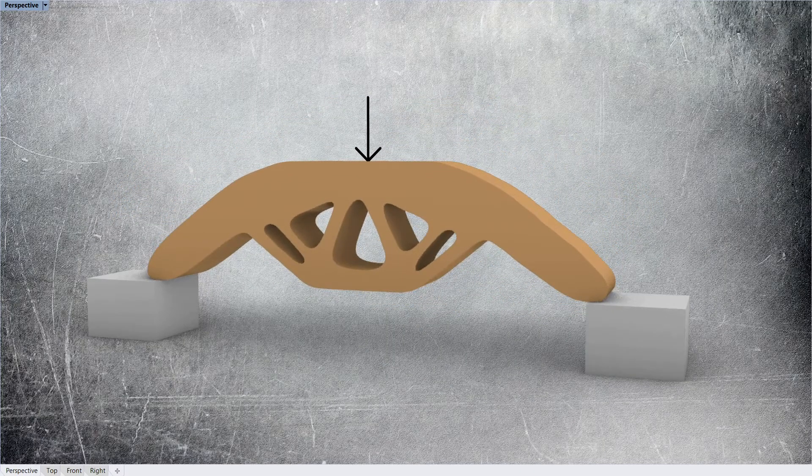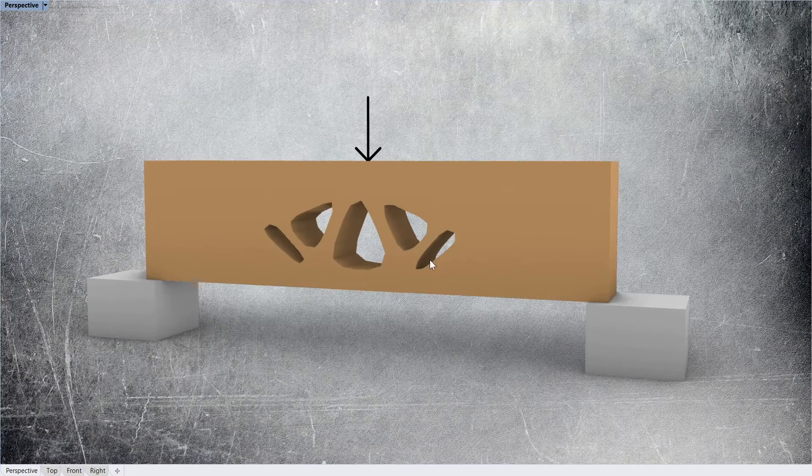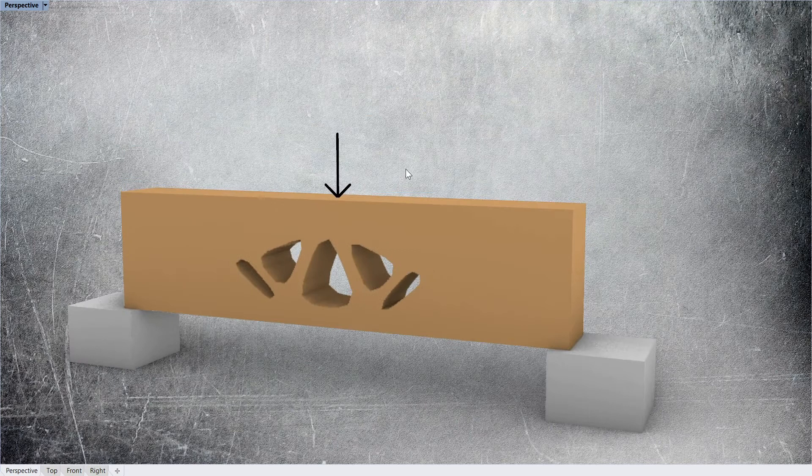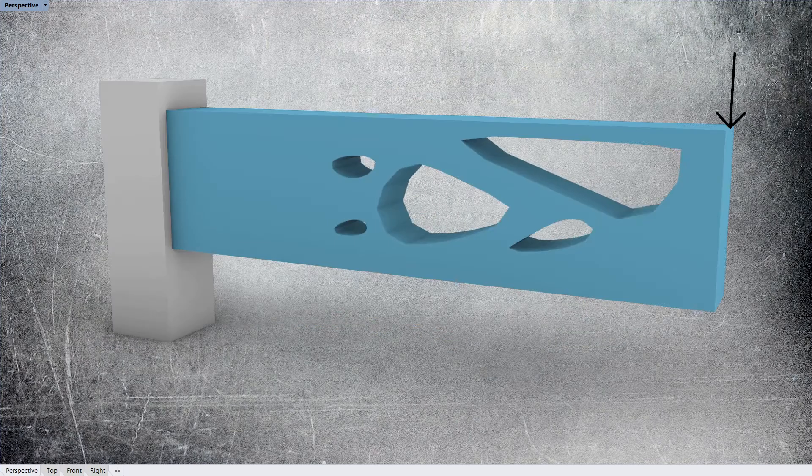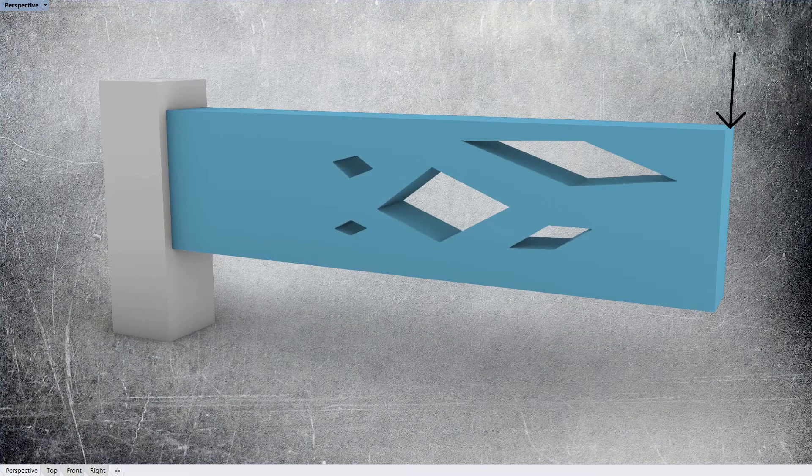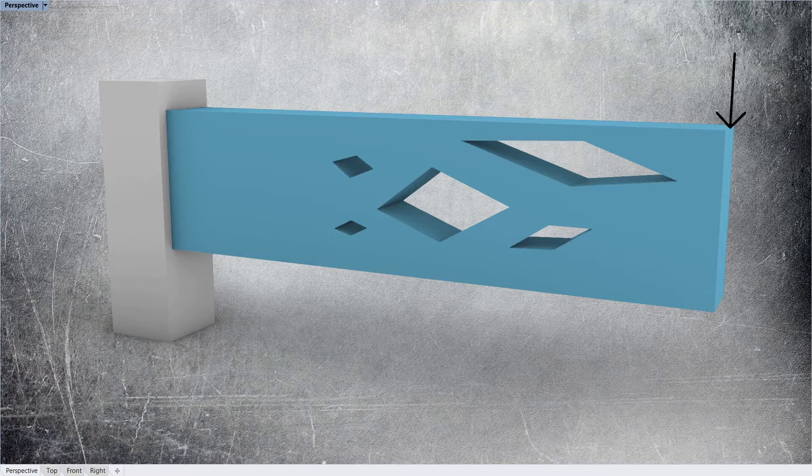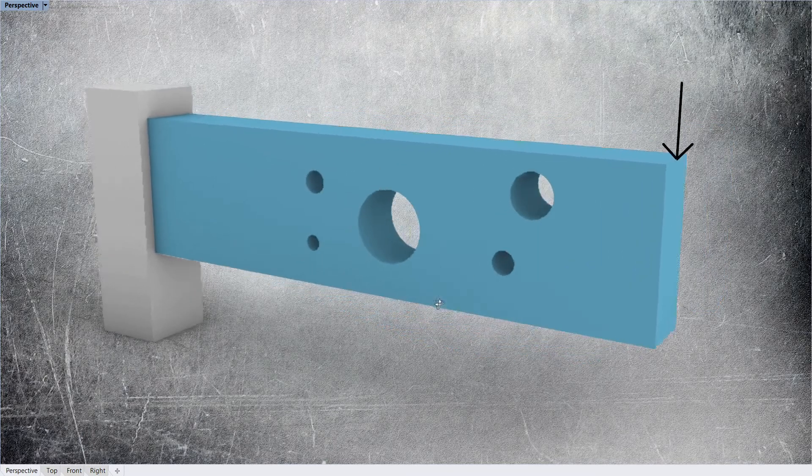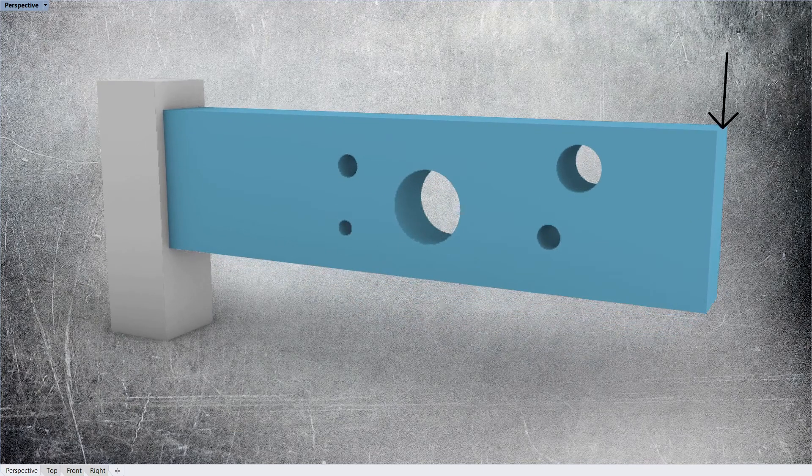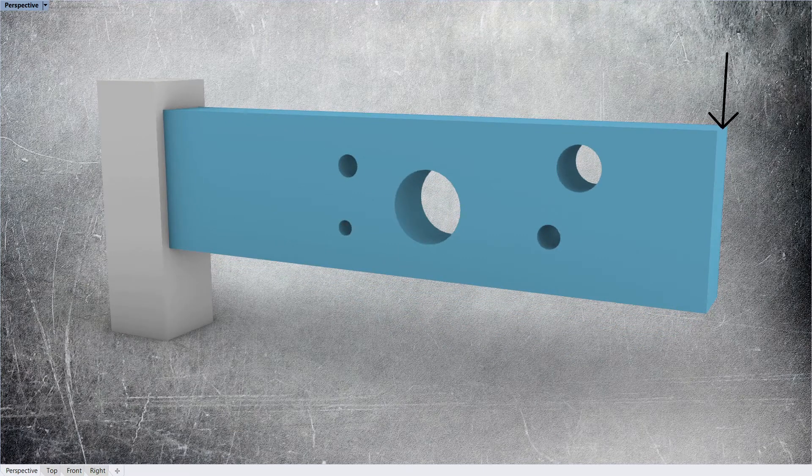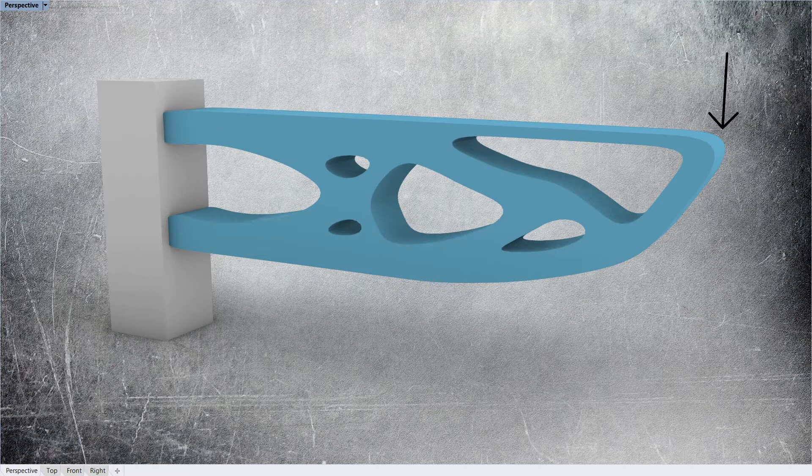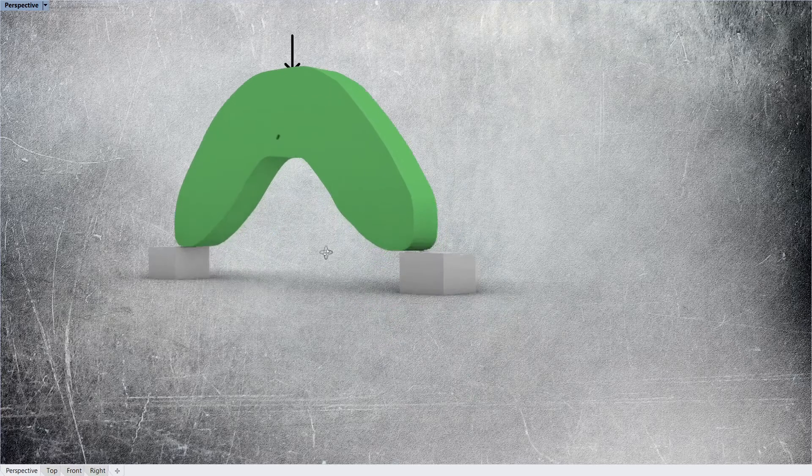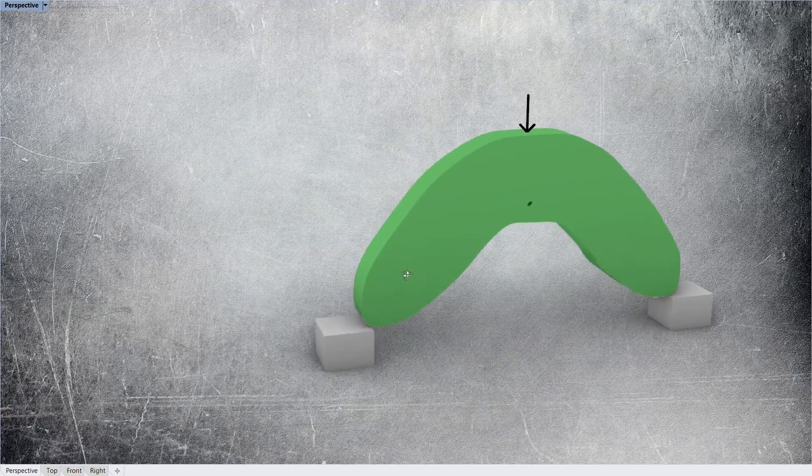Today we're going to look at generating some pretty interesting custom structural sections with the BESO algorithm. We're going to look at how it works and how options and different inputs affect the shapes produced. We're also going to look through some ways that might make this a practical and cost-effective real-world application. Hopefully this might give you some ideas when you're working with architects or your clients on future projects.